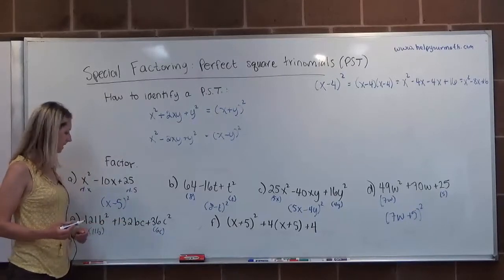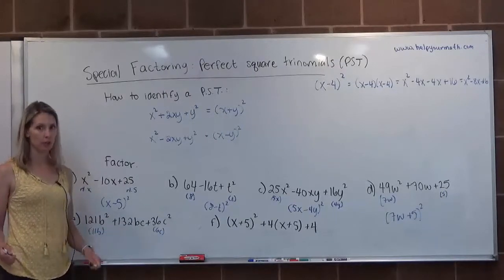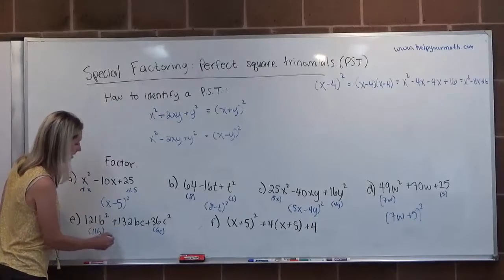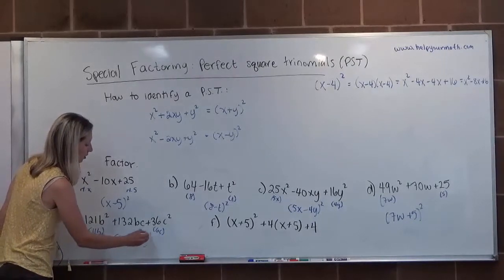If we multiply 11B to 6C, we get 66BC. Doubled would be 132BC. So it works out. It's positive there, so it would be 11B plus 6C quantity squared.